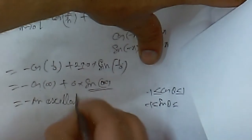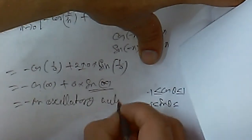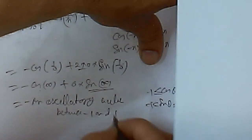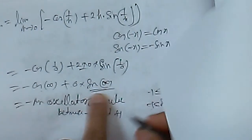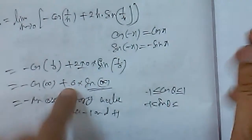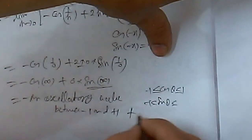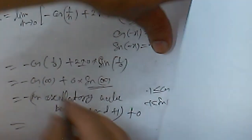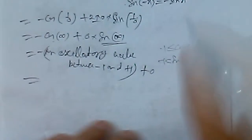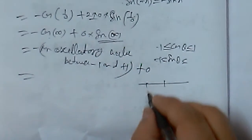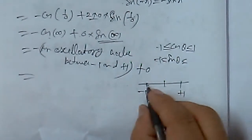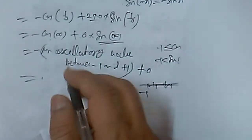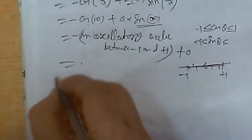The oscillatory value of cos(infinity) is between -1 and +1. Since the limit value is not a fixed number but oscillates between -1 and +1, the limit does not exist. This means the left hand limit is not a definite fixed value.